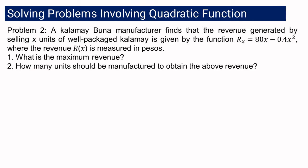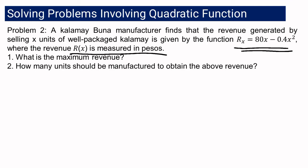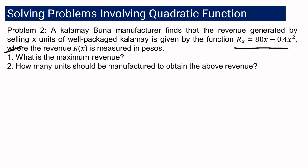For problem number 2: a kalamay-buna manufacturer finds that the revenue generated by selling X units of well-packaged kalamay is given by the function R of X equals 80X minus 0.4X squared, where the revenue R of X is measured in pesos. In this problem, the function is already given. The questions are: number 1, what is the maximum revenue? And number 2, how many units should be manufactured to obtain that maximum revenue?